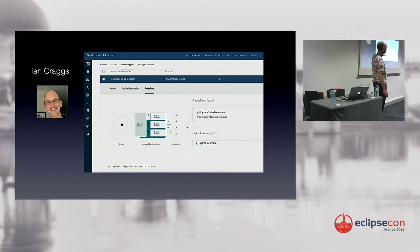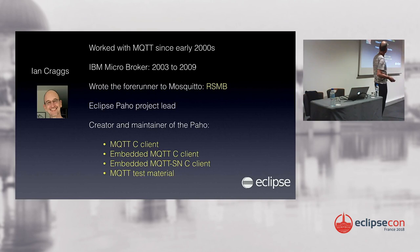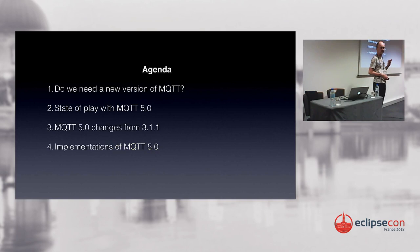My name is Ian Craggs. I work for IBM on the Watson IoT service, which uses MQTT as the connection between clients and the cloud. I also work primarily on the Eclipse Paho project, which is implementations of MQTT client libraries. I've done that for six or seven years.